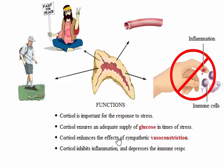Cortisol inhibits inflammation and depresses the immune response. Too great an inflammatory response can harm nearby healthy tissue, and too vigorous an immune response may cause harm, potentially leading to autoimmunity. Cortisol acts to temper these important body defenses. This action of cortisol is exploited by the pharmaceutical industry for the treatment of rashes, asthma, other inflammations, and autoimmune diseases.